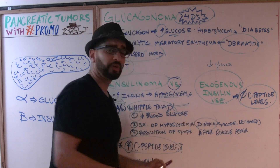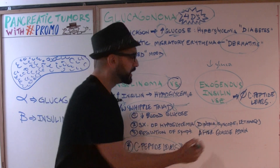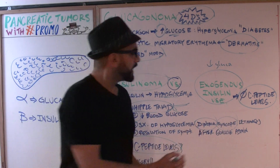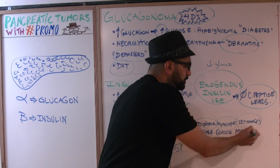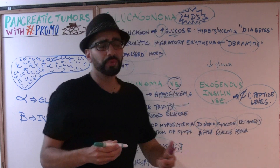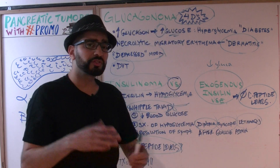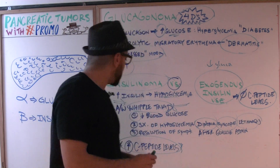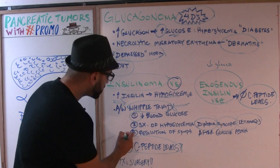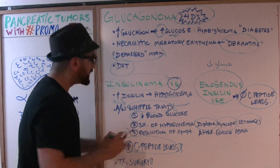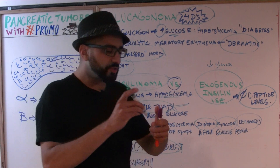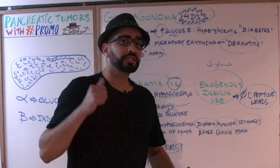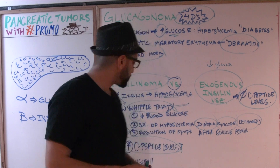The patient will have double vision known as diplopia, fainting episodes — syncope — and the patient will feel lethargic, weak, and fatigued. All of those things a patient will have when they have low glucose levels. The third component of Whipple's triad, very important: the symptoms will resolve after you give the patient glucose.